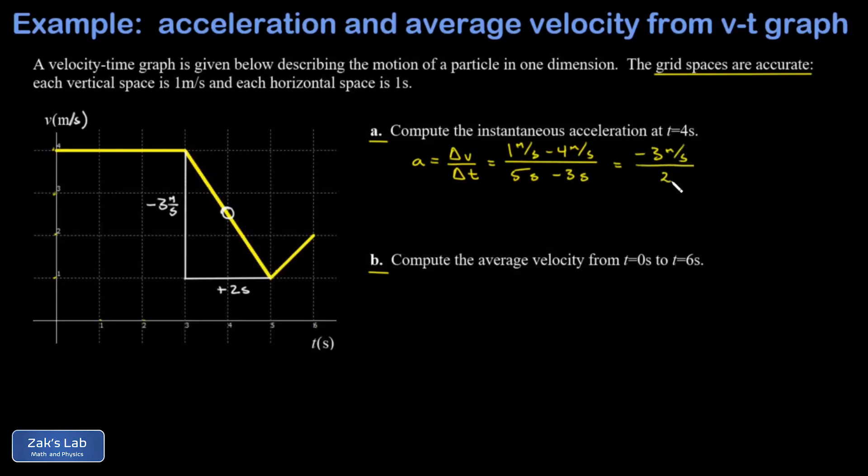And this gives me the same thing, I have a negative three meters per second divided by two seconds, and I can see this simplifies to negative one and a half meters per second per second, or meters per second squared.